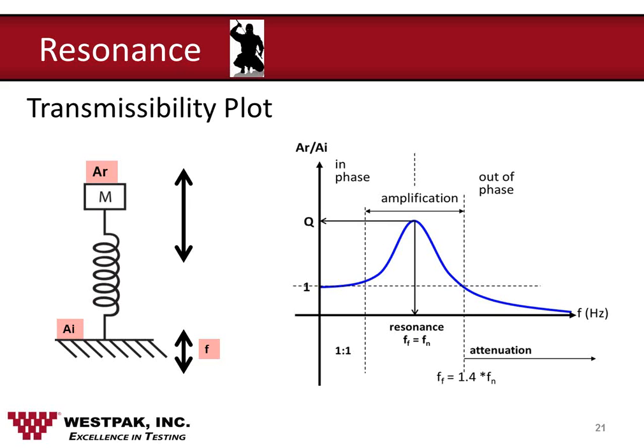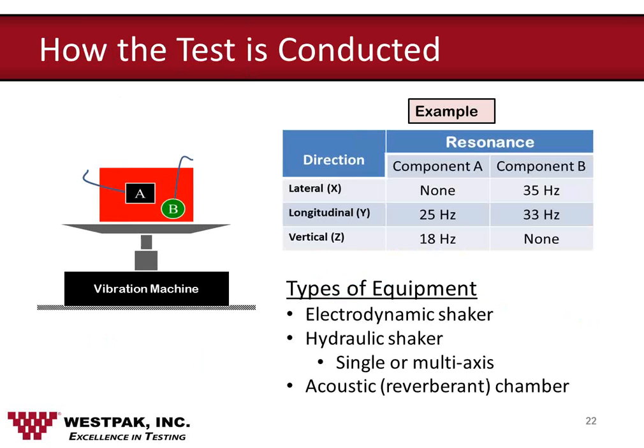The maximum acceleration of the system is referred to as Q, and it's a measure of the damping built into the system. The test is conducted by fastening the test specimen to the table of a suitable vibration test machine. The flexible components within the product are monitored with response accelerometers. The vibration table is set to vibrate in a sinusoidal or random vibration mode, and the response/input ratio of each monitored component is plotted as a function of frequency, resulting in a transmissibility plot for each of the monitored components.